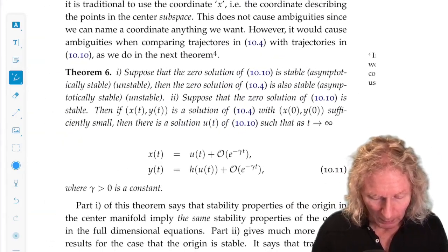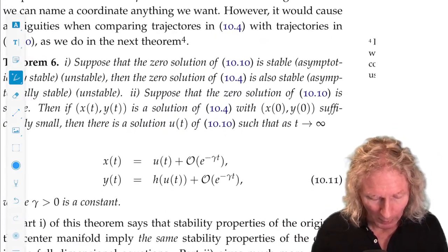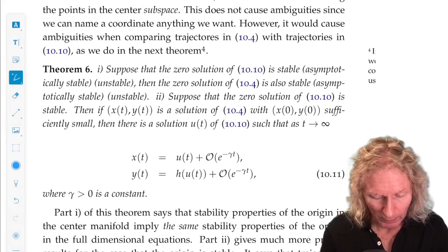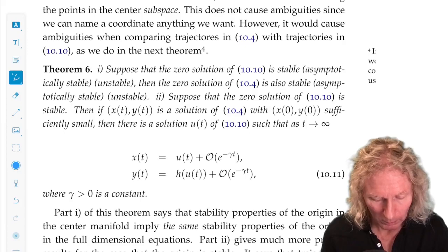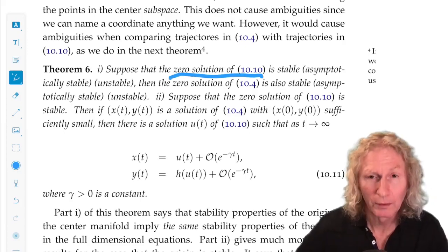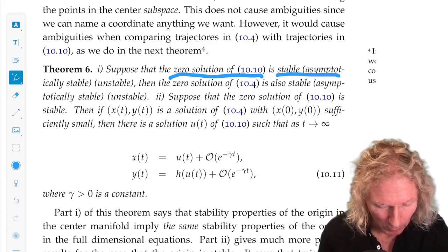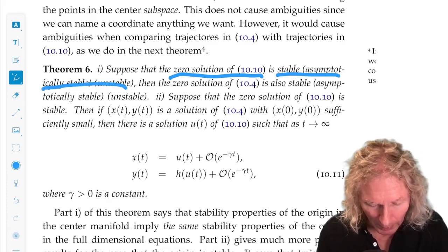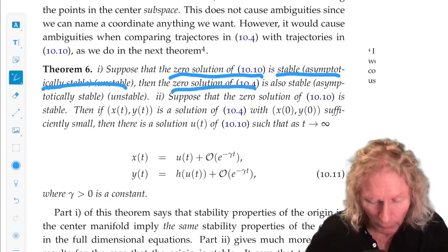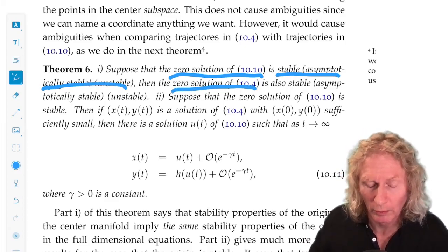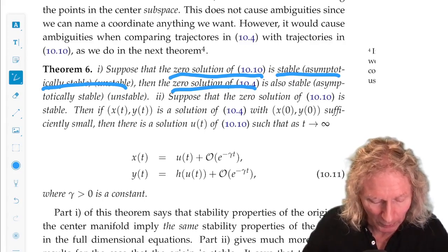Then the second theorem, remember the three bullet points, suppose the origin of the center manifold equation is stable or asymptotically stable or unstable, then the origin of the full equation is also either stable, correspondingly, asymptotically stable or unstable.